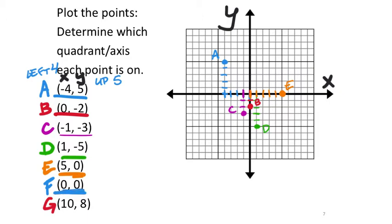Point F is at 0, 0 — that's right at the origin, not up or down, not left or right. Point G is at 10, 8 — x value of 10, so I go to the right 10: 1 through 10. Then y is positive 8, so I go up 8: 1 through 8. That's the location of G at 10, 8.